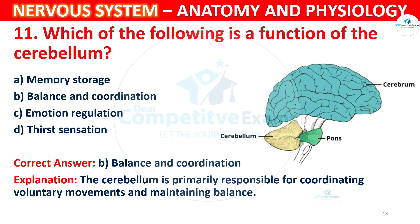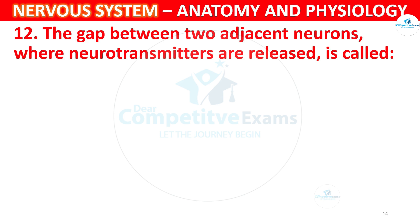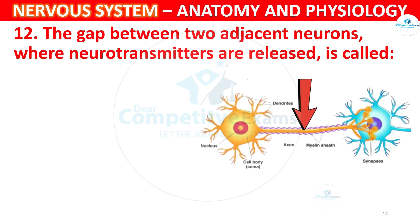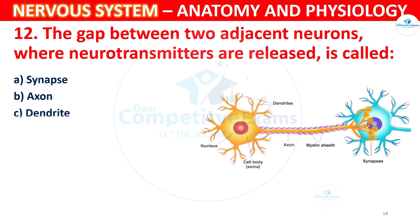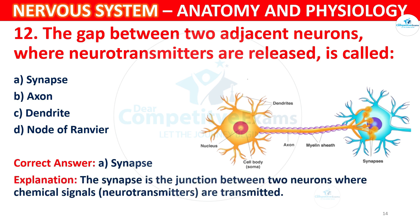Question 12: The gap between two adjacent neurons where neurotransmitters are released is called what? Options: A) Synapse, B) Axon, C) Dendrite, D) Node of Ranvier. The correct answer is A, Synapse. The synapse is the junction between two neurons where chemical signals called neurotransmitters are transmitted.